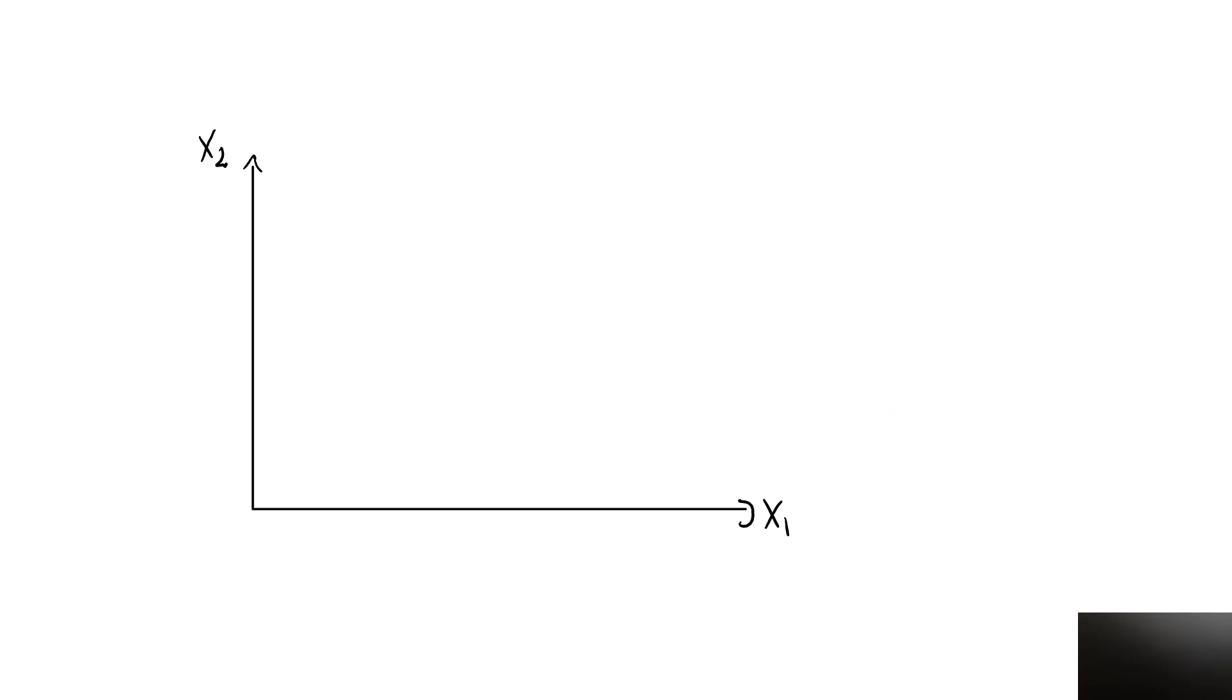Let's see exactly why the assumption of strict monotonicity will make any indifference curve the graph of some function f. If x2 is some function of x1, then we know that feeding one value of x1 into this function will give you one and only one value of x2.